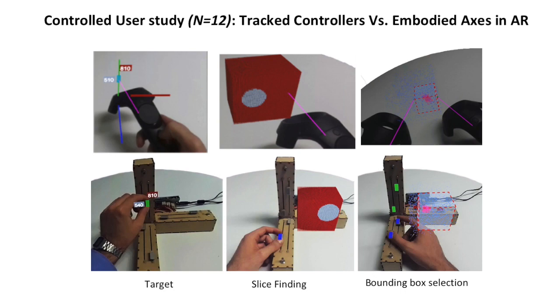For the target task, the user had to match the value and position of the grey target with the red target. For the slice finding task, they had to find the center of the biggest sphere hidden within a 3D volume. For the bounding box, they had to define the smallest bounding box around the red dots in the 3D scatter plot.